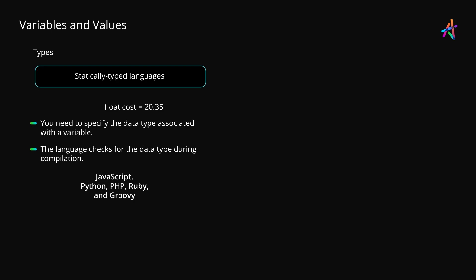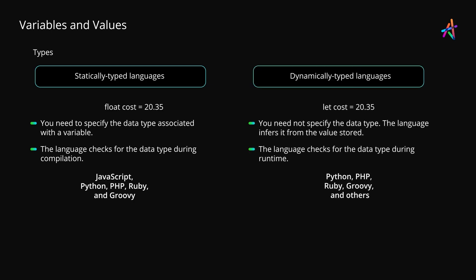Languages like Java, Rust, C++, Haskell, C# and Swift are all examples of statically typed languages. JavaScript, on the other hand, is a prime example of a dynamically typed language, where the language detects the data type on its own from the kind of data stored in a variable — and this happens when the program is executed, that is during runtime. Besides JavaScript, Python, PHP, Ruby, and Groovy are examples of dynamically typed languages.